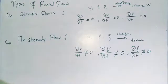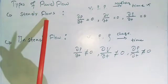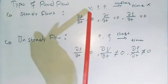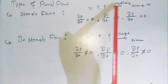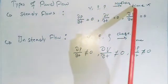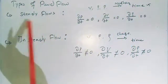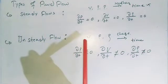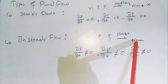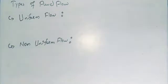To summarize: steady flow is a type of flow in which the fluid characteristics such as velocity, pressure, and density do not change with respect to time — such flows are known as steady flow. Unsteady flow is defined as a flow in which the flow characteristics change with respect to time — such flows are known as unsteady flow.